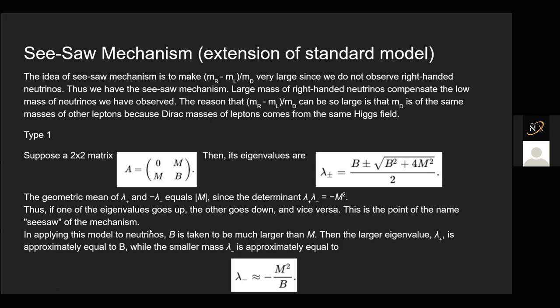You can apply this model to neutrinos. If you take B to be very large compared to M, then the large eigenvalue lambda-plus is approximately equal to B, because the 4M-squared term vanishes. The minus part is going to be approximately M-squared divided by B. This is the seesaw mechanism — M acts as a pivot, and the masses can keep going up and down, but if one goes up, the other has to go down.